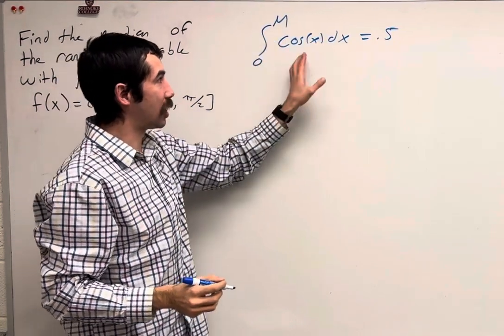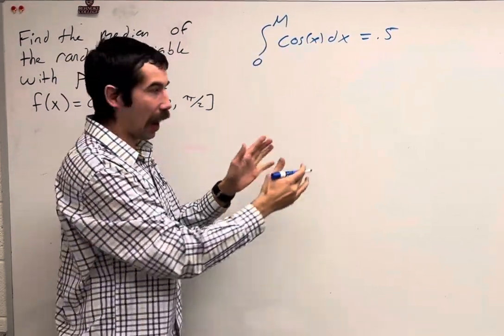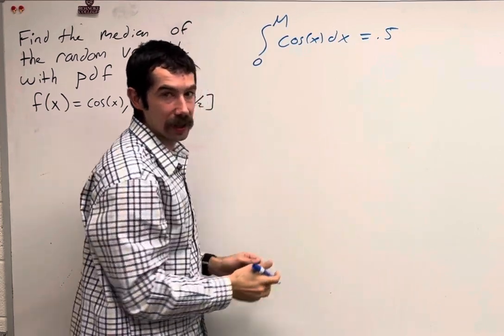We want to find m such that this integral is equal to 0.5. Half the area is left of m, half the area is to the right of m.